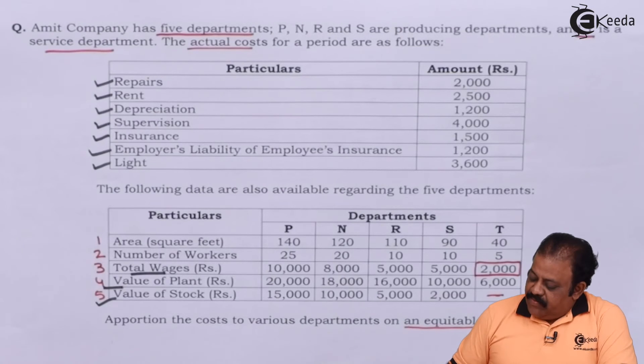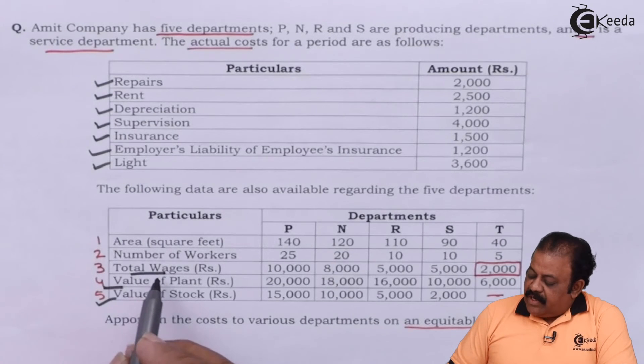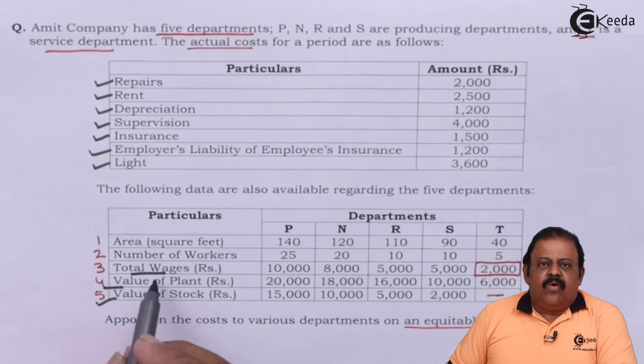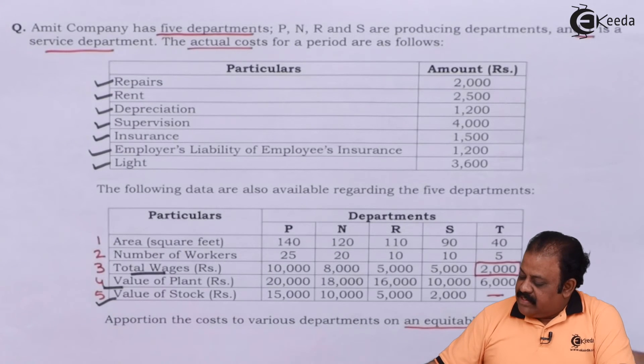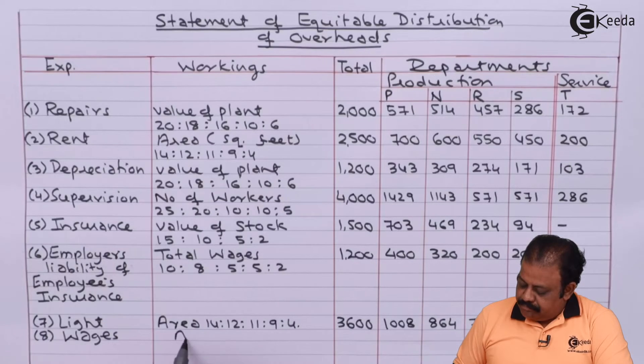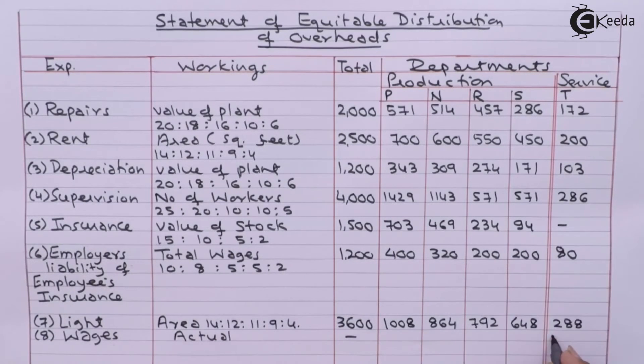The last item is wages, which we are required to consider only for service department T.